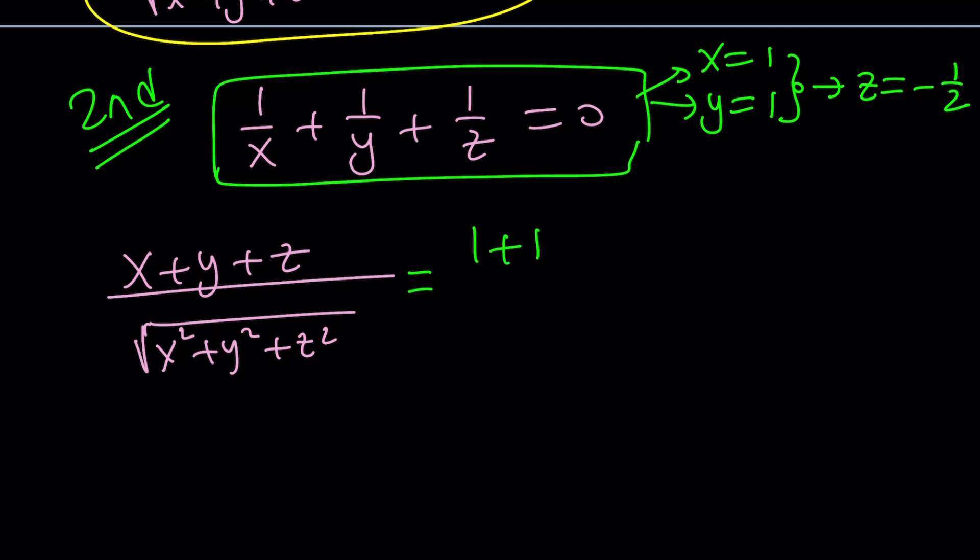Let's go ahead and plug these in. x is 1, y is 1, z is negative 1 half. And at the bottom, I'm going to have the sum of squares, which is 1 plus 1 plus 1 fourth. This is going to become 2 minus 1 half, which is 3 halves. And this is going to be 2 plus 1 fourth, which is 9 fourths. Its square root is 3 halves. And guess what? This is going to become positive 1.